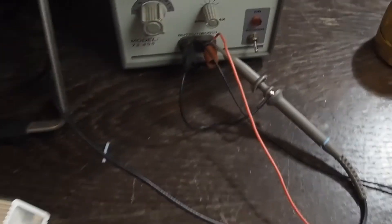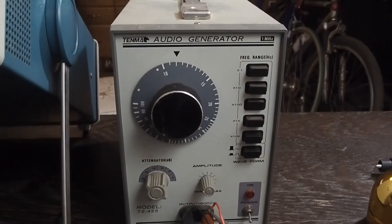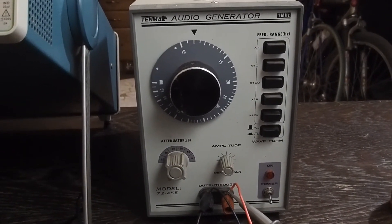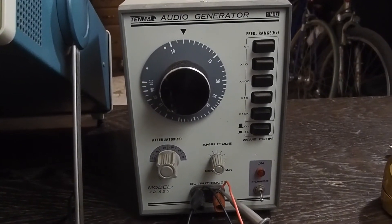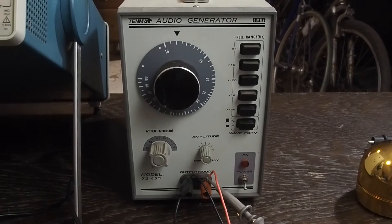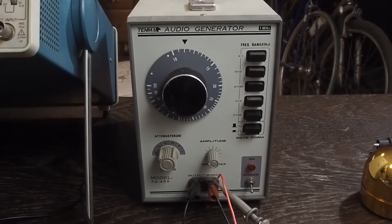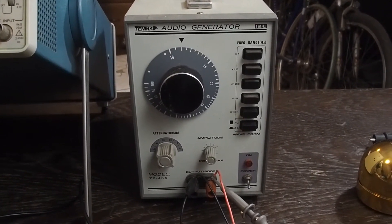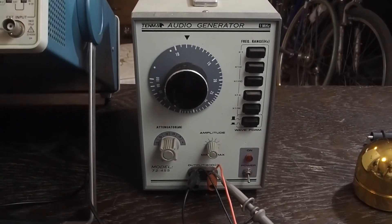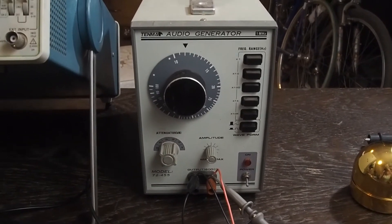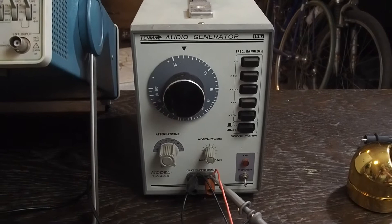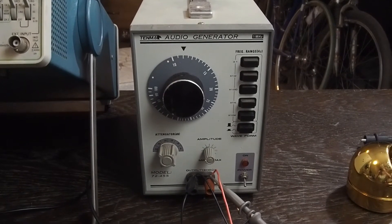And my last piece of equipment is this old TEMA signal generator. It's a 72-455. I got a really smoking deal on eBay for it. I did have to replace the large electrolytic capacitors inside it, which is not a shock, but it works great, and it does everything I need. It's not the cleanest signal generator on the planet, but it's perfectly good for what we're doing here.